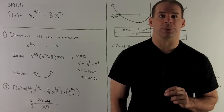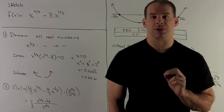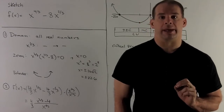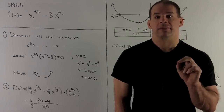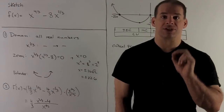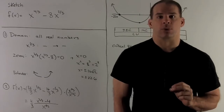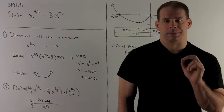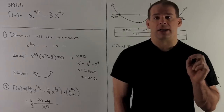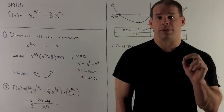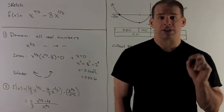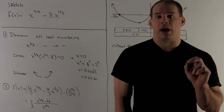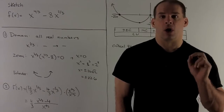Sketch the graph of f(x) = x^(4/3) - 8x^(2/3). We're going to work through our laundry list of items for sketching. First up is the domain. We have fractional exponents, so we have to worry about the odd and evenness in the numerator and denominator. Rewriting x^(4/3) as (x^(1/3))^4, cube roots accept negative inputs and return negative outputs, so every real number is fair game. Our domain is all real numbers.